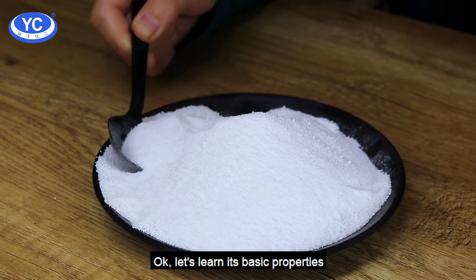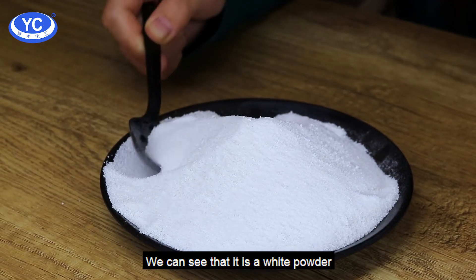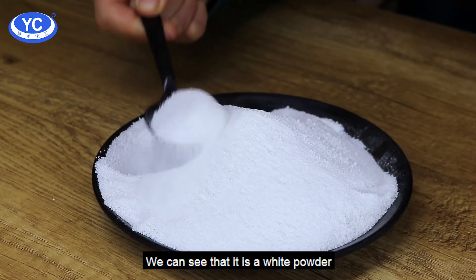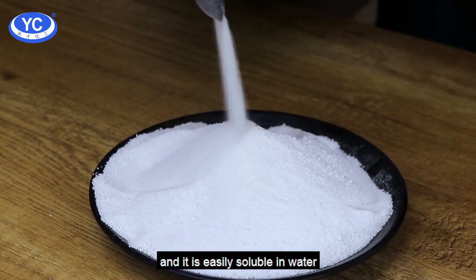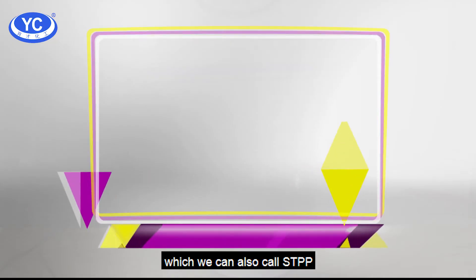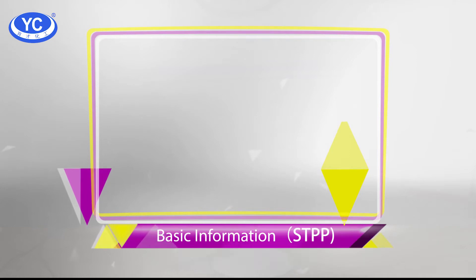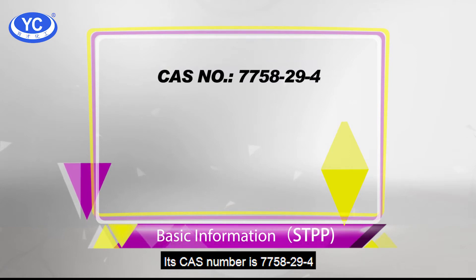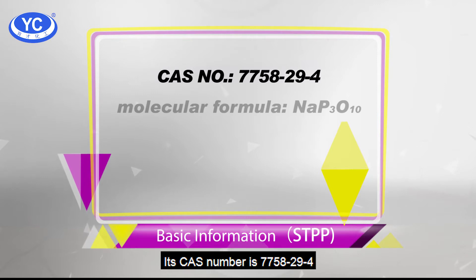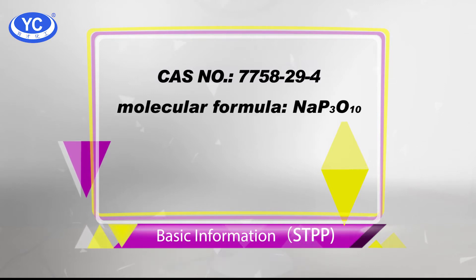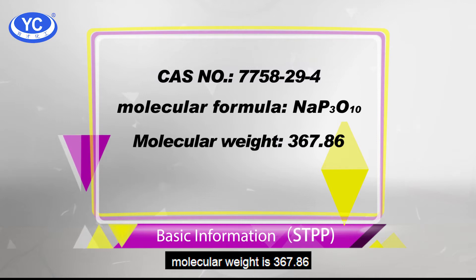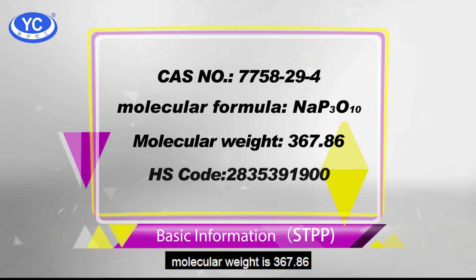Let's learn its basic properties. We can see that it is a white powder and it easily dissolves in water, which we also call STPP. Its CAS number is 7758-29-4. Its molecular formula is Na5P3O10. Molecular weight is 367.86.